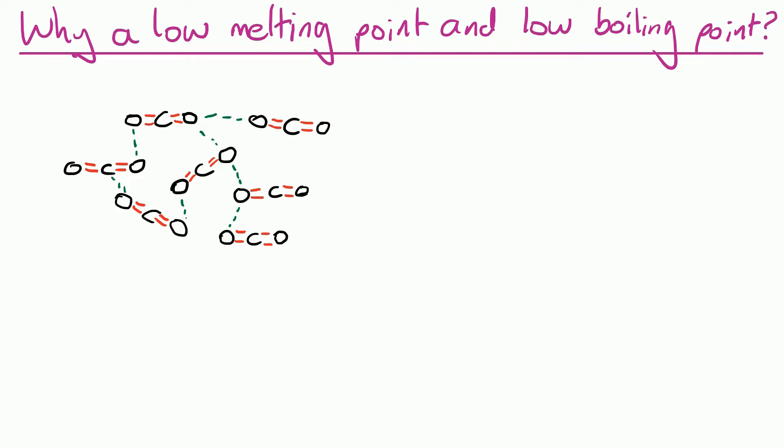We're now going to use what we know about the bonding in simple molecules to explain why they have a low melting point and a low boiling point. Like we saw the sugar melting easily. We need to remember when something melts or boils, the particles move slightly further apart and start moving around more. And that means you've got to break or overcome the forces and bonds between the molecules.